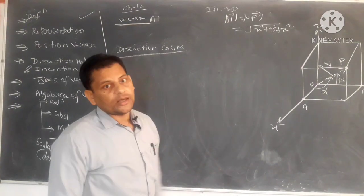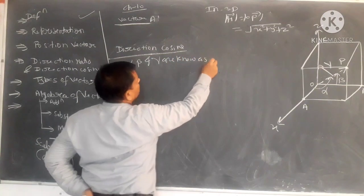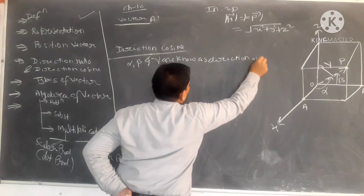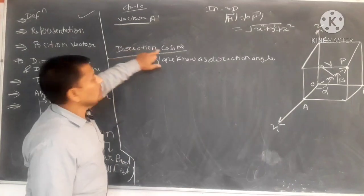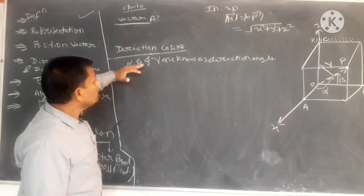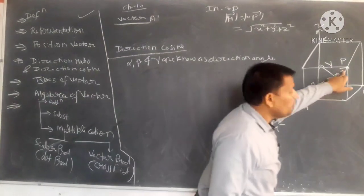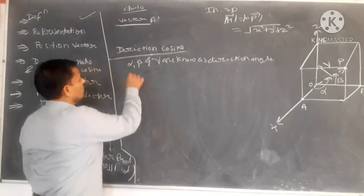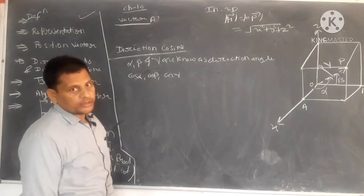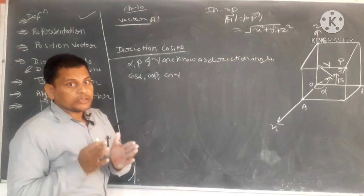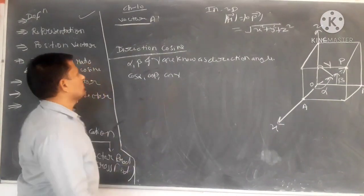These angles are fixed and their notation is fixed. Vector OP makes angle alpha from X, beta from Y, and gamma from Z-axis. These are called direction angles — alpha, beta, and gamma — and are known as direction angles. Now what we need to study are direction cosines. If we take the cosine of these angles — cosine of alpha, cosine of beta, cosine of gamma — these become the direction cosines of vector OP.